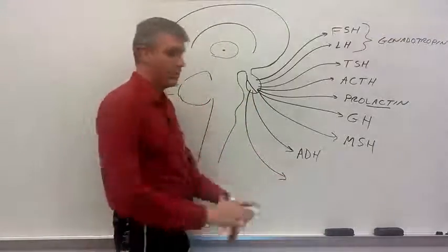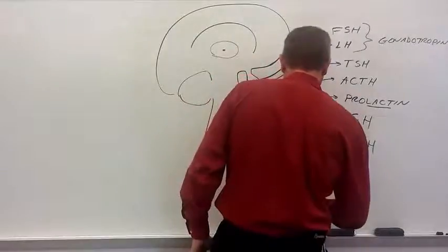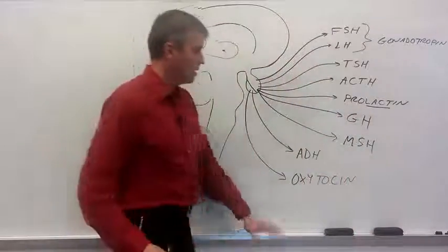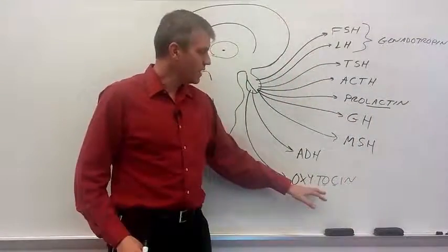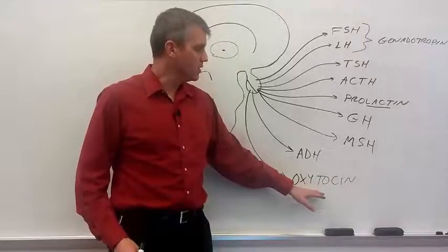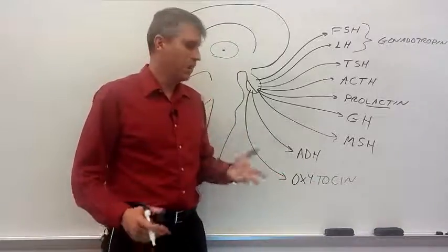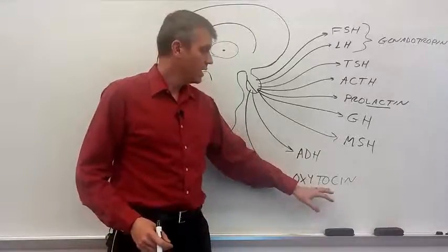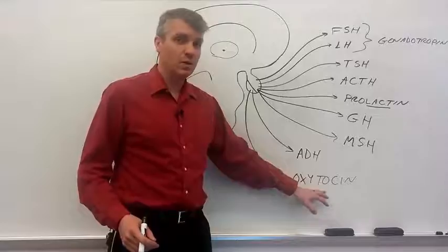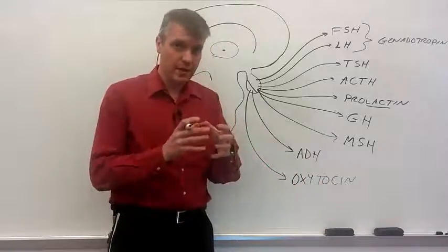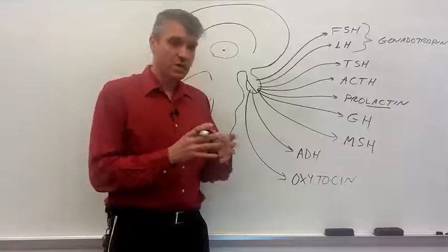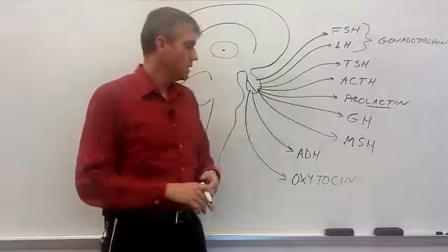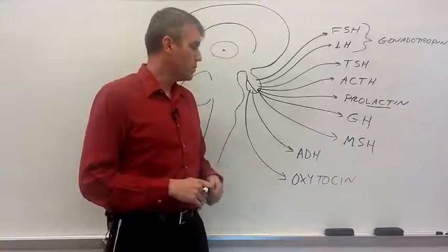The last one, the final one, I promise, is oxytocin. Oxytocin is the only one that doesn't really give you a clue about what it does. But it has two major functions. One of them is during labor, childbirth. It's part of a positive feedback loop. This hormone causes uterine contractions. And when those contractions happen, that leads to the production of more of this hormone and we get an increase in uterine contractions until eventually the baby is born.